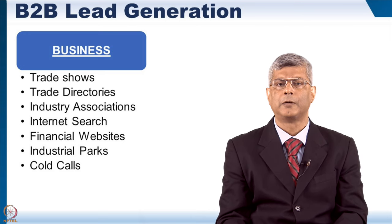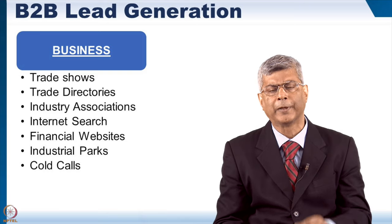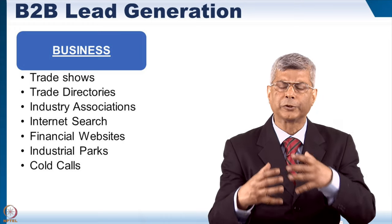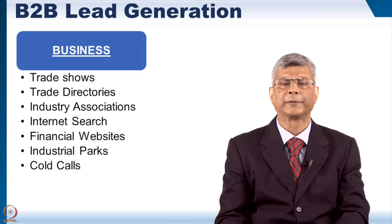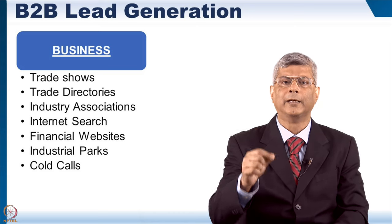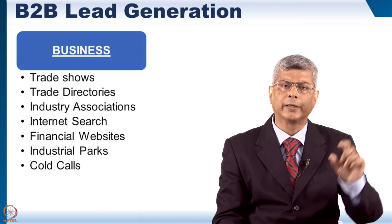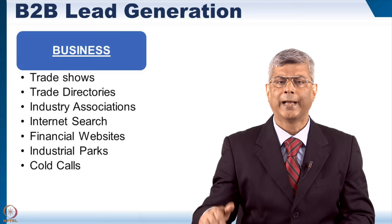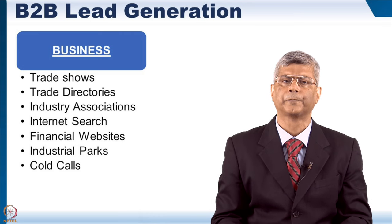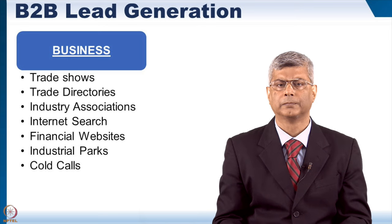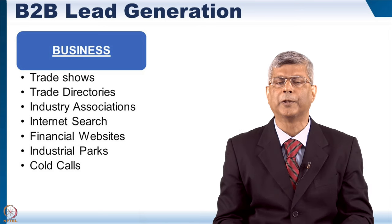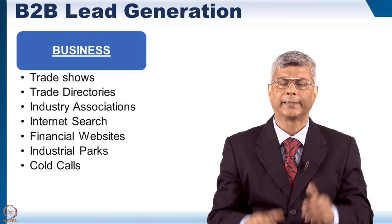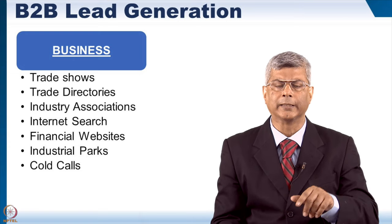Industry associations — association of car manufacturers, pharmaceutical manufacturers, automotive component manufacturers, chemical manufacturers — they all have associations. You can go to the association office, look up the website, and get a list of businesses. Remember, what you're trying to collect here are names of companies, not individual people's names. Then you do an internet search. You can also use ChatGPT and some of the new AI tools to do this search. Financial websites: there are 5,000-plus stocks listed on the Bombay Stock Exchange. You can go to financial websites like Money Control or ShareKhan and do an industry-wise search to find companies — and that becomes your lead.